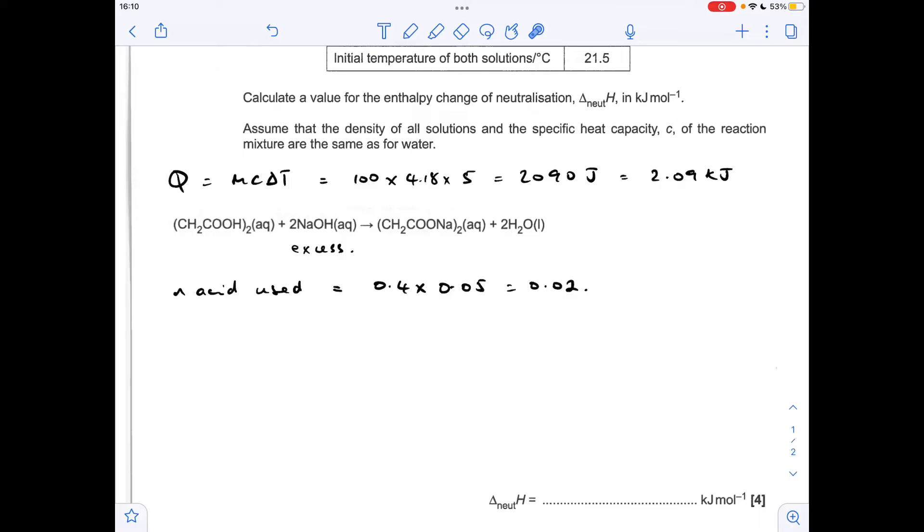Enthalpy change of neutralisation is all about the enthalpy change per mole of water formed. So we need to work out how many moles of H2O formed. It's obviously going to be double the moles of acid.